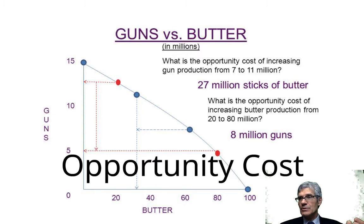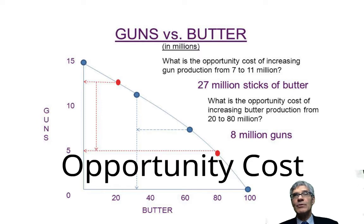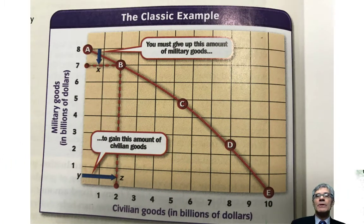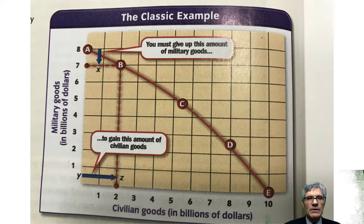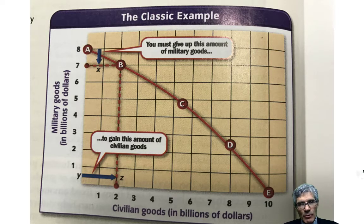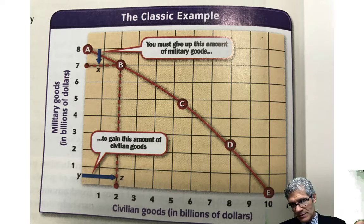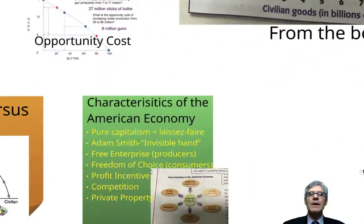Opportunity cost is the thing you didn't do. You've got ten dollars and you want to go to a movie but you also want to buy notebooks for school, so you buy the notebooks — the opportunity cost is you didn't go to the movie. From your book: to gain this amount of civilian goods, the blue arrow moves from Y to Z. If you want to make that much more butter, the cost is you'll no longer produce the previous amount of guns — you'll have to produce less, down to B. That's your opportunity cost — the amount you gave up.